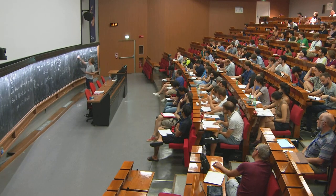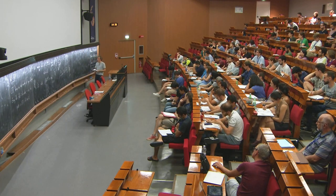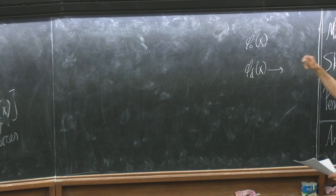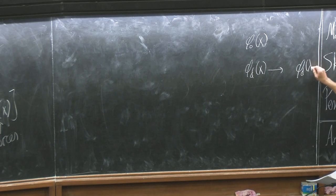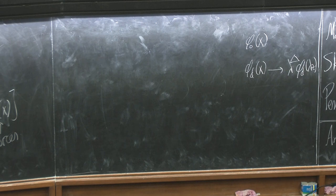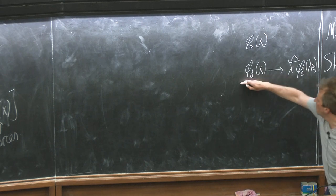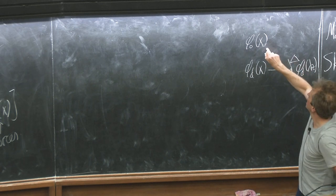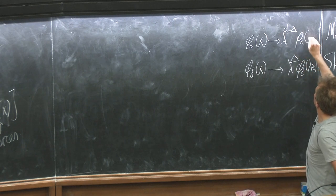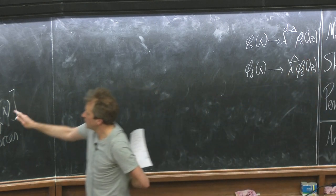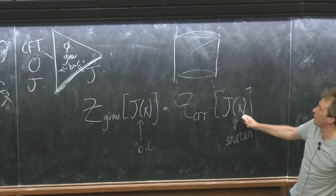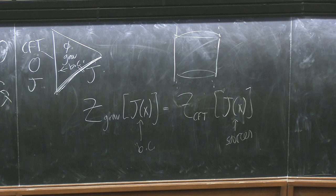Note, by the way, an important point: phi_d, under AdS isometries — part of which act as a scale transformation from the perspective of the conformal boundary — transforms as a field would in a CFT with scale dimension delta. In particular, phi_0 scaled as a corresponding source would scale. So J does indeed have the correct scale dimension to be a source for an operator with dimension delta, in the scalar case and more generally.